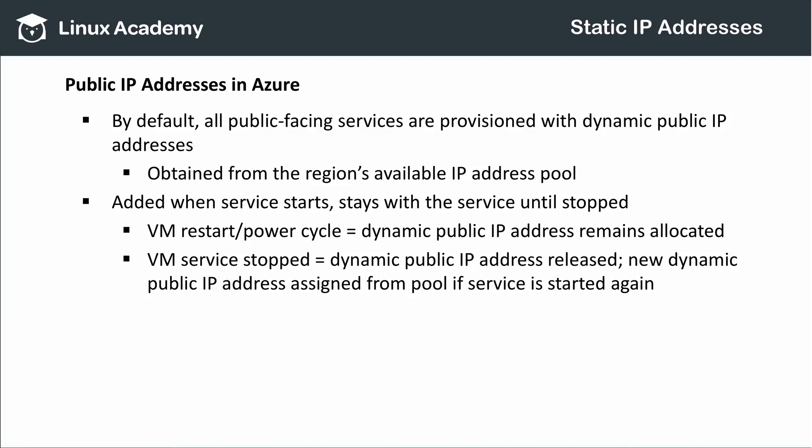When you create a public internet-facing Azure service, by default it is assigned a dynamic IP address from the region's pool of available IP addresses. This address stays with the resource until its underlying service is stopped. When I create a new virtual machine, a public IP address will be assigned to its network interface automatically by Azure. That public IP address will remain with the VM even if it's restarted or crashes.